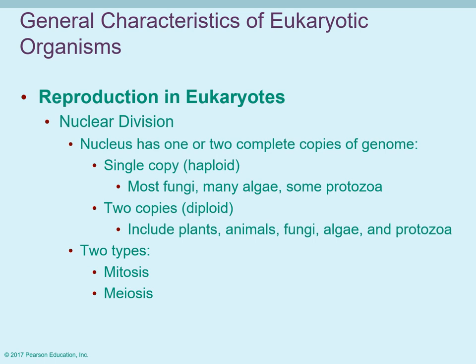Those that are diploid include your plants and your animals, and then some fungi, some algae, and protozoans. There are two types of nuclear divisions that can occur: mitosis and meiosis.